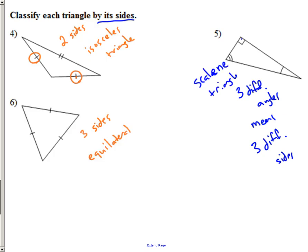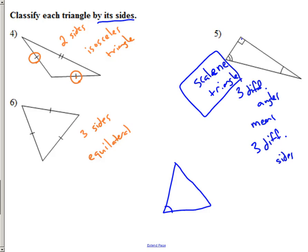That's how you can use angle markings to determine side type. If a triangle has no side markings but shows two angles marked the same, two congruent angles mean two congruent sides — and that would make it an isosceles triangle.